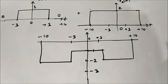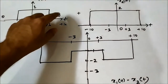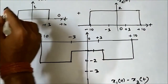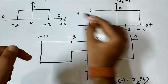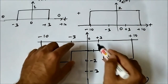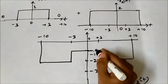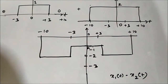So this is the shape of the signal x1(t) minus x2(t). From minus 10 to minus 3 and plus 3 to plus 10, x2(t) is 2, so 0 minus 2 equals minus 2. From minus 3 to plus 3, x1(t) is 1 and x2(t) is 2, so 1 minus 2 equals minus 1. This is the resultant signal x1(t) minus x2(t).